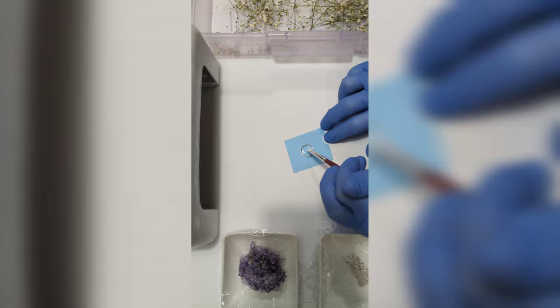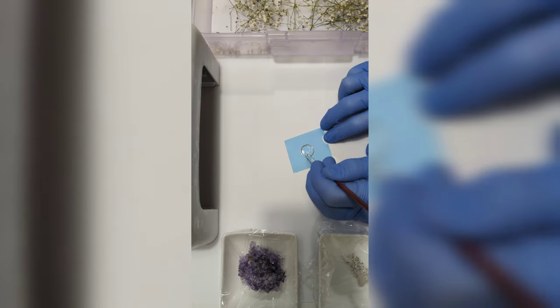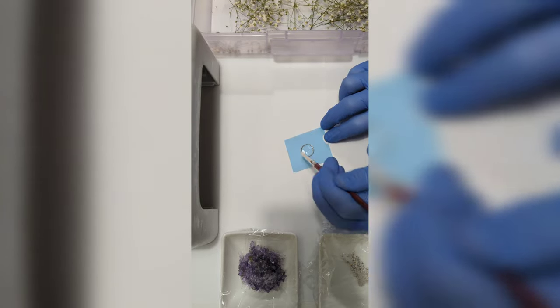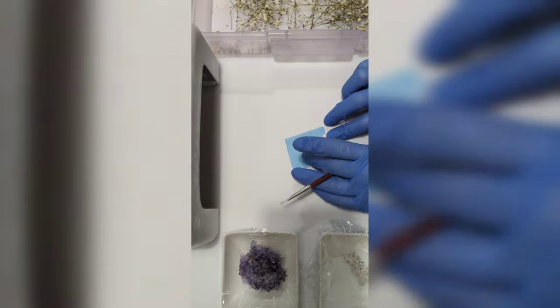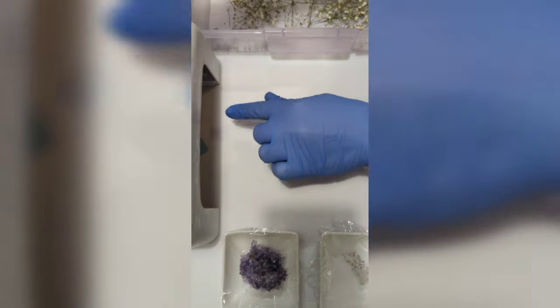First I have to spread out the resin and ensure there's no bubbles. Then I'm setting it in a UV lamp. This cures the resin so it's nice and hard and crystal clear.